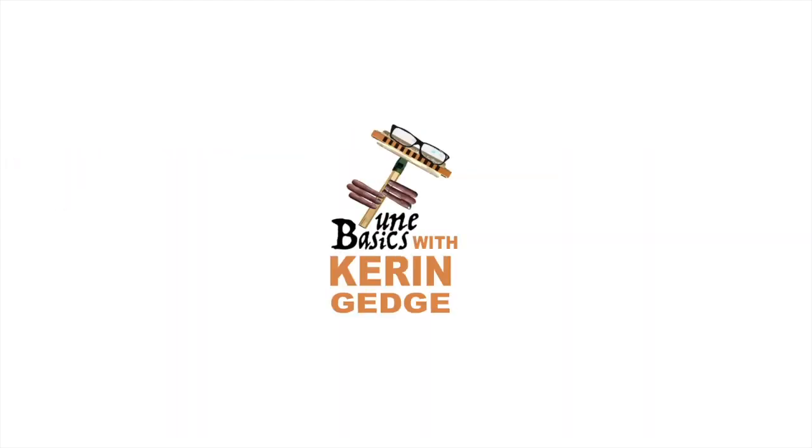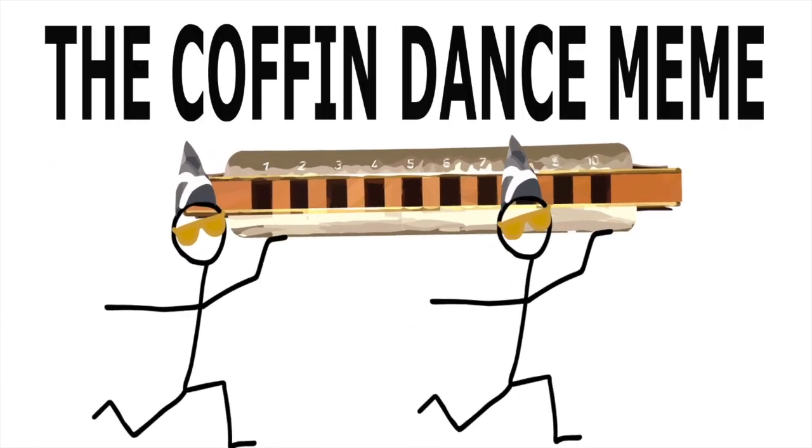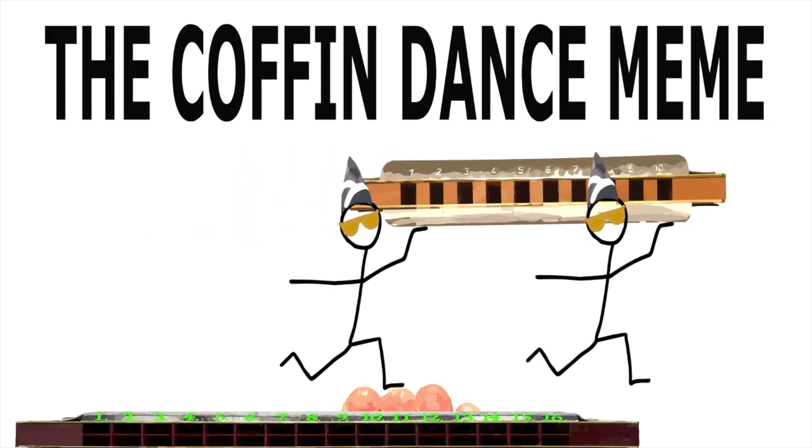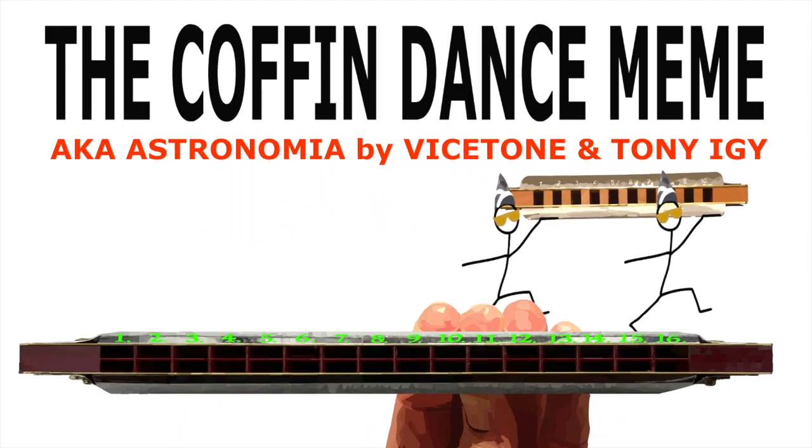Hi guys, welcome to Tune Basics, the series that teaches you how to play the basics. Today we'll be looking at that very popular coffin dance meme tune, otherwise known as Astronomia, and how to play it on a tremolo harmonica with 16 holes.